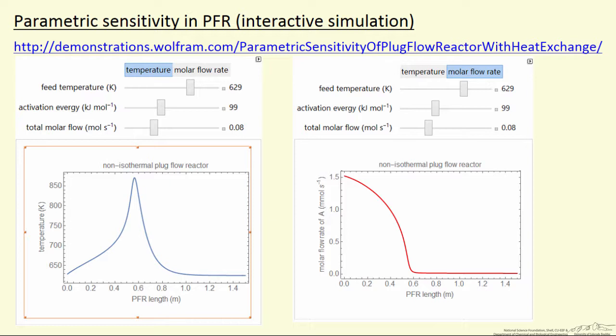And there are three parameters that can be changed, the feed temperature to the reactor, the activation energy for the reaction, and the total molar flow rate of A coming into the reactor. And the idea of parametric sensitivity is how sensitive is the behavior to slight changes in these parameters.